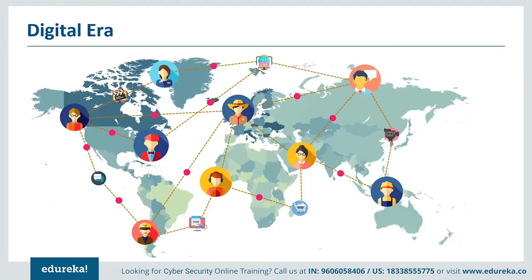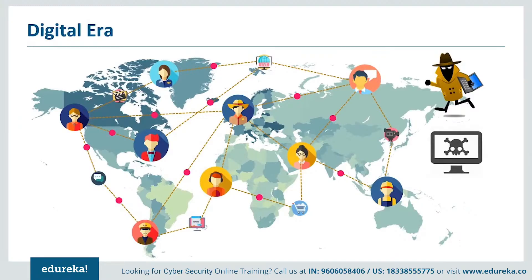Cyber criminals are in the business of stealing sensitive data like contact numbers, credit card information, and bank account details that they sell to third parties for profit. There are also malicious hackers with personal enmity hacking into systems to expose vulnerabilities. Hacktivists, inspired by political and social activism, hack systems opposed to their ideology. Making use of these vulnerabilities present in the internet's architecture, people are trying to initiate attacks in cyberspace — we call them cyber attacks.